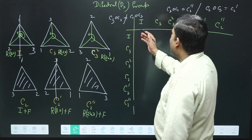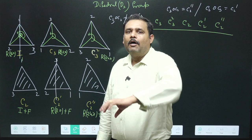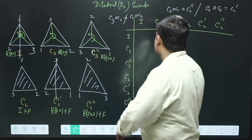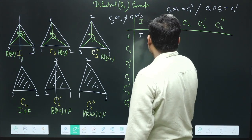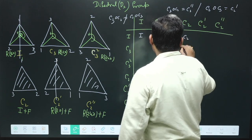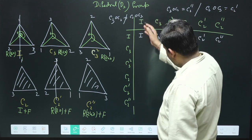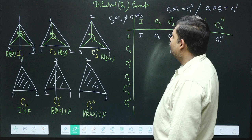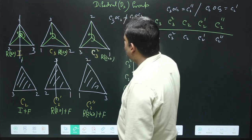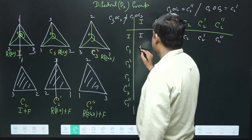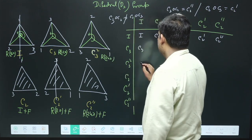Filling the identity row and column is straightforward: applying identity to any element returns that element, so the first row and column simply reproduce the element labels: I, C3, C3², C2, C2', C2''. Similarly, applying any element to identity gives the element itself.